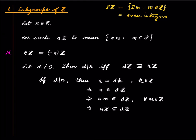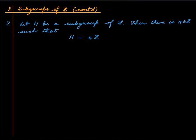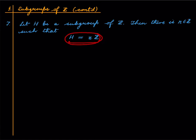Now what we are going to do is characterize all the subgroups of ℤ. What is clear is that if you fix an integer n, then nℤ is a subgroup of ℤ — that is an exercise. This theorem shows that every subgroup of ℤ looks like this: if you fix a subgroup of ℤ, then there is some integer n such that the subgroup is actually equal to nℤ.